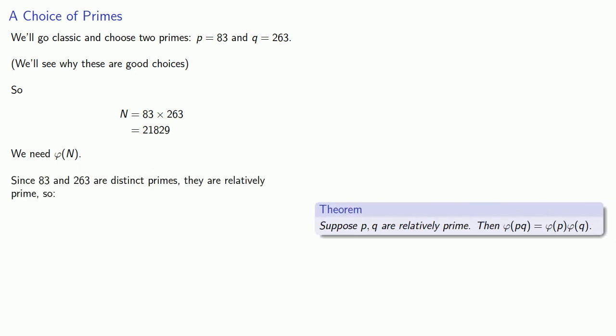Our first step is to multiply these two to get the public modulus. Now we also need phi of n. Since 83 and 263 are distinct primes, we can use a theorem that says if two numbers are relatively prime, then phi of the product is the product of the phi values. So we know that phi of 83 times 263 is phi of 83 times phi of 263.